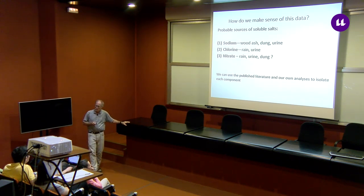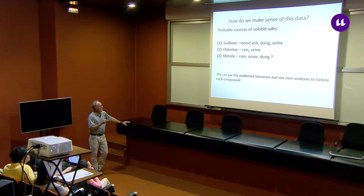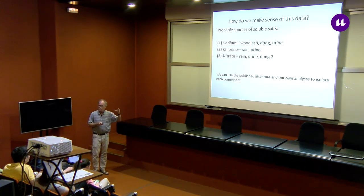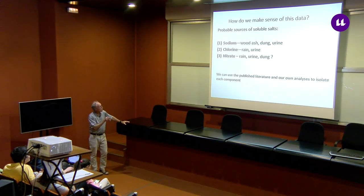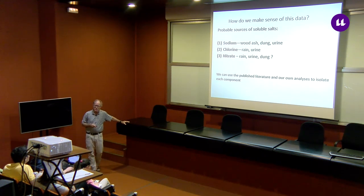Here comes the modeling part. What we did is we tried to quantify the contribution of rain and dung to nitrate and isolate by that analysis the urine contribution. We went to the published literature and some of our own analyses to try to isolate each one of these components and construct a model. In the end, what we're trying to understand is how much sodium, chlorine, and nitrate is from urination, because urination will tell us something about population.